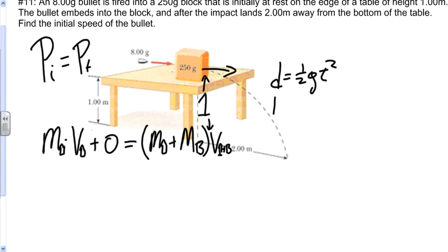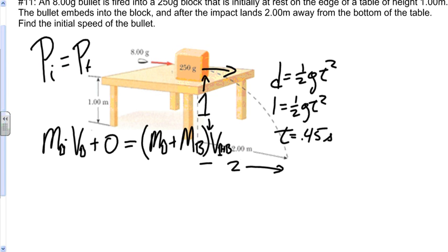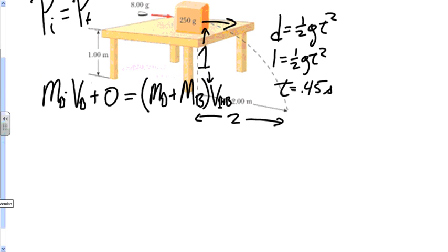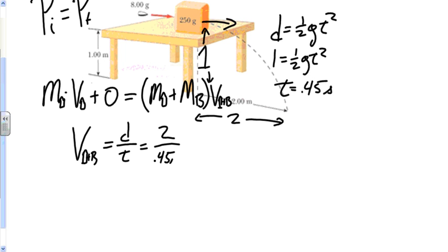Going through with d of one meter equals one-half g t squared and solving for t, we find t equals 0.45 seconds. We also know the horizontal distance the bullet-block system travels is two meters, so the velocity of the bullet-block system equals the distance divided by the time: two meters divided by 0.45 seconds, giving us a velocity of about 4.43 meters per second.